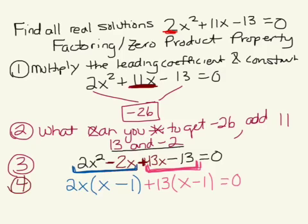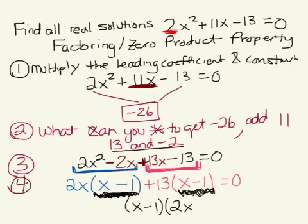So our very second to last step, we're going to factor out what's in common. So both of these terms have an x minus 1 in the problem. So we're going to factor out x minus 1. And when I take out x minus 1 from this first term, what do you have left over from the first term? Should be 2x. Then when I take out the x minus 1 from the second term, what do you have left over from this part? Should be your 13.